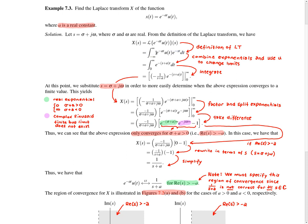We combine the two exponentials and use the unit step function to change the limits of integration, which leads to the next line. We then integrate the exponential function to obtain the next line. I'm going to rewrite s in Cartesian form as s = σ + jω, where σ is the real part and ω is the imaginary part of s, to reduce the likelihood of making mistakes.